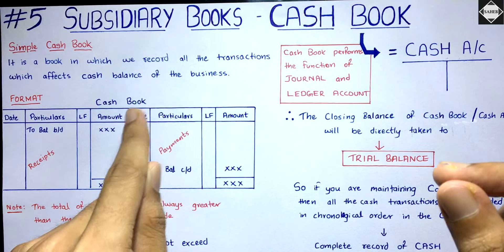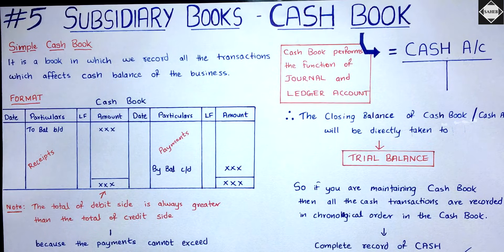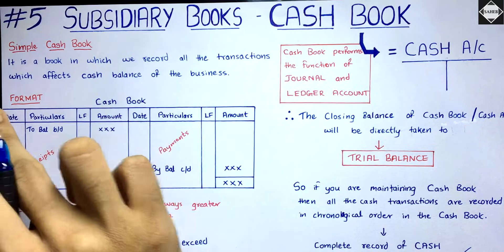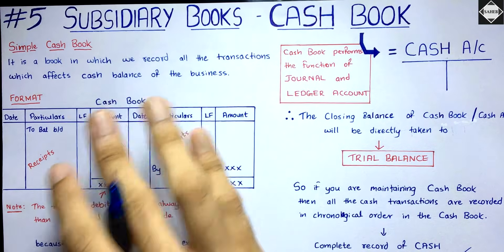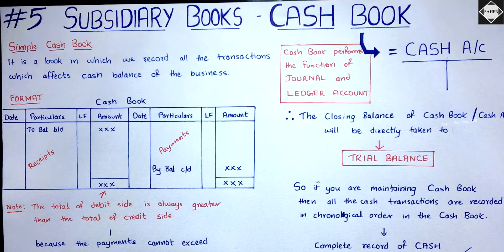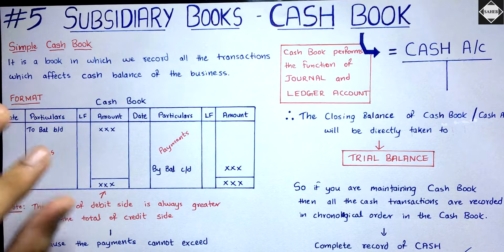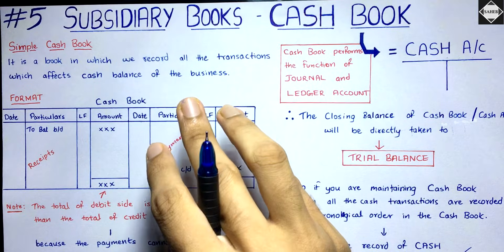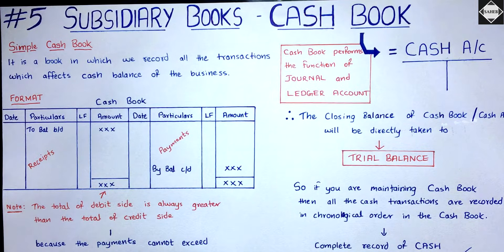If you made a cash sale of 5,000, cash is increasing so the cash account will be debited — 'To Sales.' That is how you do the recording. The first recording happens here, and at last you will have a closing balance which is taken to the trial balance. One important thing: the debit side of the cashbook will always be more than the credit side, because the receipt side records cash coming in.